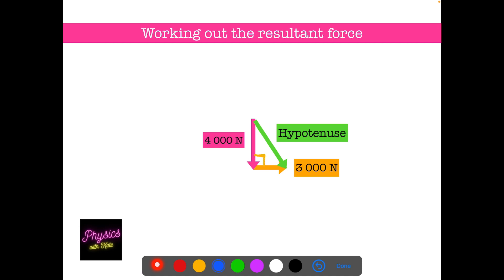So hopefully you can remember from GCSE maths, Pythagoras theorem is a squared plus b squared is equal to c squared, where c squared is the hypotenuse. A and b are the other sides of the triangle. It doesn't matter which way around you've got those. So let's use it.